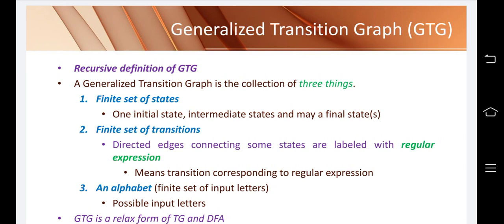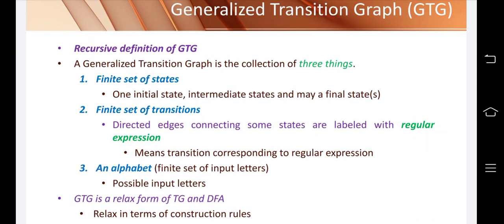The next topic is the generalized transaction graph, GTG. Its definition is a collection of three things: the first is a finite set of states including initial, intermediate, and possibly final states — same as before. The second is a finite set of transitions where directed edges connecting states are labeled with regular expressions, so you can take a transition for a whole regular expression. The third is a finite set of input alphabets.